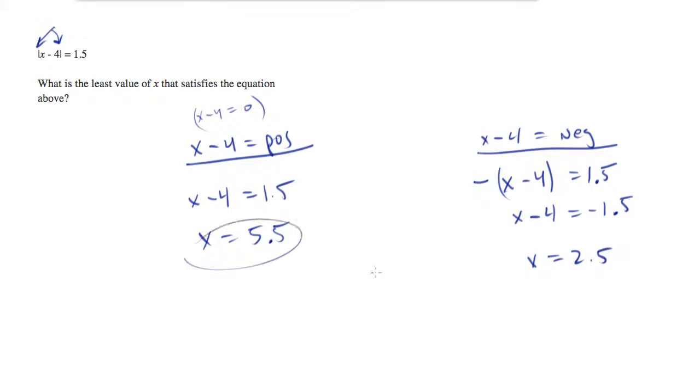Both of these are viable solutions for x, but only one of them will be the least value of x that satisfies the equation. And that will be this one. So x is 2.5. 2.5 will be correct. 5.5 will be incorrect.